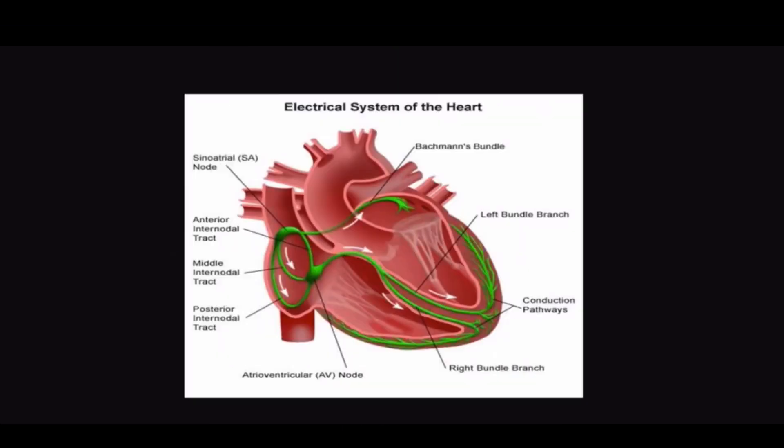Let's look at a couple of definitions. The systolic pressure is the highest pressure of the cardiac system. The diastolic pressure is when the heart is at rest between beats. Automaticity is the ability of cardiac cells to spontaneously depolarize without stimulation.